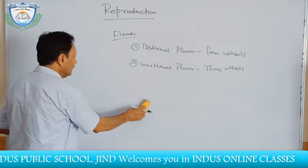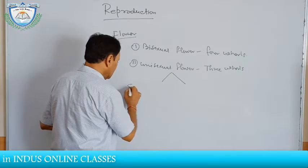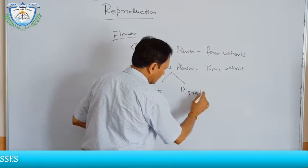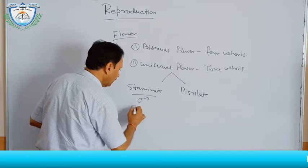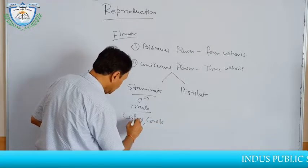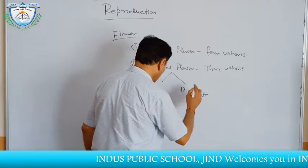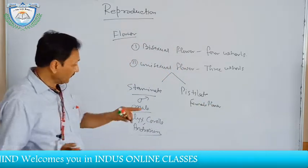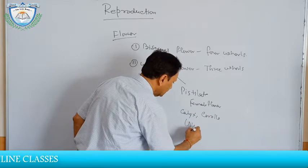Before discussing the typical bisexual flower structure, note that the unisexual flower is of two types: the staminate flower and the pistillate flower. The staminate flower is the male flower, having calyx, corolla, and androecium — three whorls. The pistillate flower is the female flower, having calyx, corolla, and gynoecium.